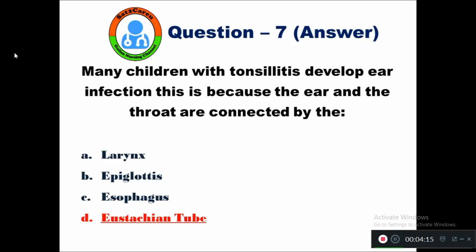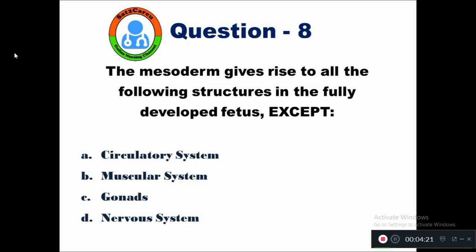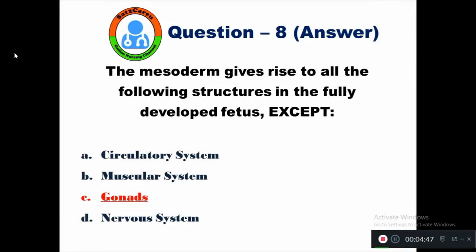Question 8: The mesoderm gives rise to all the following structures in the fully developed fetus except — option A circulatory system, B muscular system, C gonads, D nervous system. The mesoderm gives rise to all structures except gonads. All other organs — circulatory system, muscular system, and nervous system — develop from the mesoderm, except gonads.